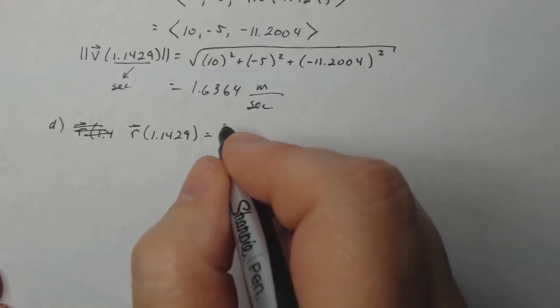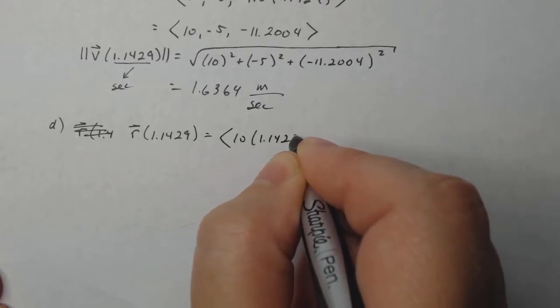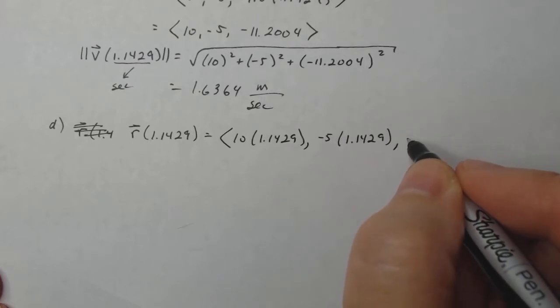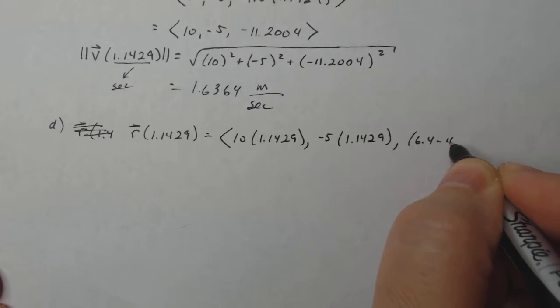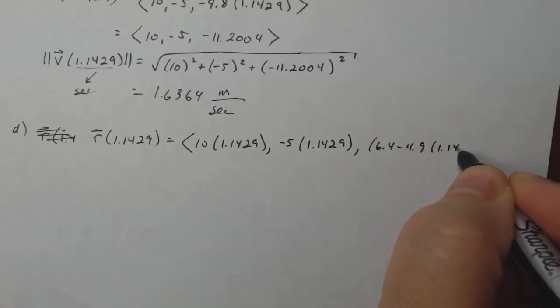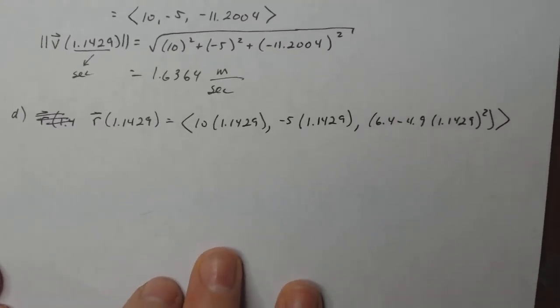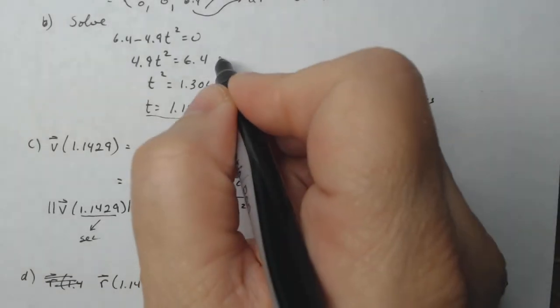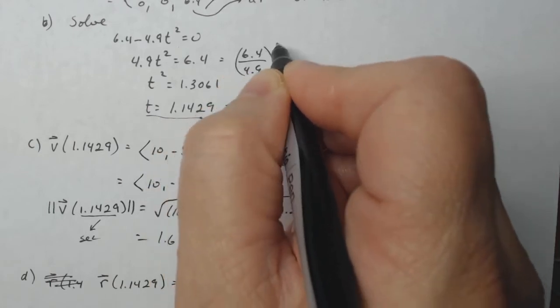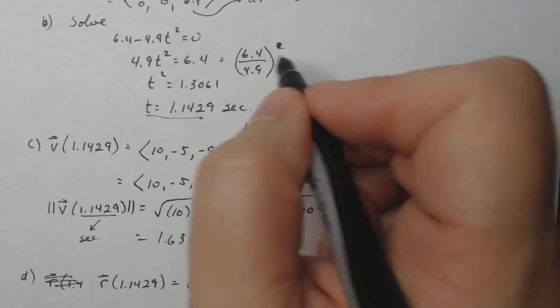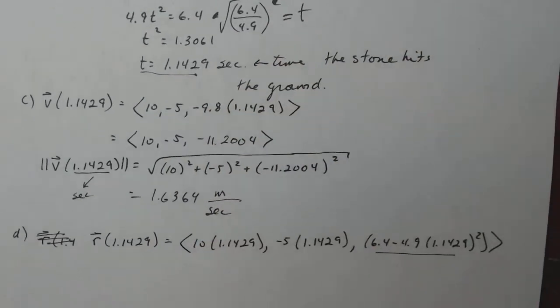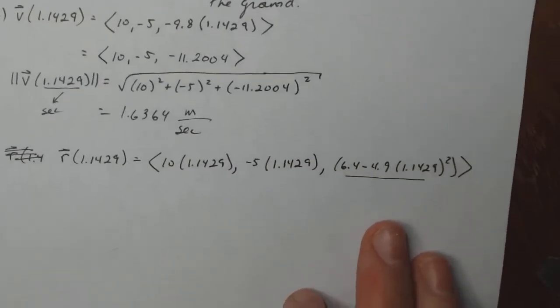So let's see. That vector will give me 10 times 1.1429, negative 5 times 1.1429, 6.4 minus 4.9 times 1.1429 squared. Now this isn't going to be exactly zero because I've estimated 1.1429. So the actual value here for t is the square root of 6.4 divided by 4.9, and I just estimated it. So if I had put that in there, it would have been exactly zero. But let's just for fun see how close we are to zero because I know it should be zero.